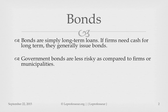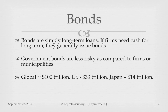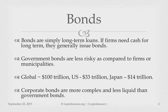As a fundamental general rule, government bonds are less risky compared to firms or municipalities. Let's look at the numbers — what does the bond market look like? The global bond market is about one hundred trillion dollars. Think about it — one hundred trillion dollars. Out of that, the US alone has about thirty-three trillion dollars, and second to the USA is Japan at fourteen trillion. These numbers may be off by some percent, but the idea is that it's a very big market. Corporate bonds are usually more complex and less liquid than government bonds.